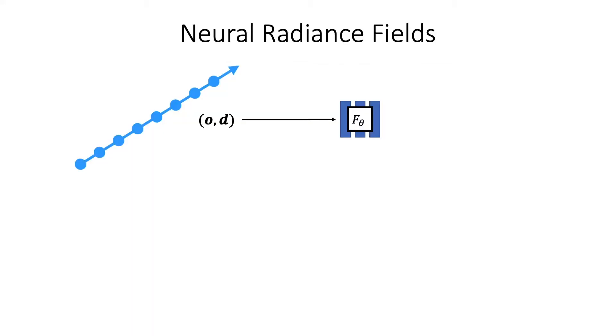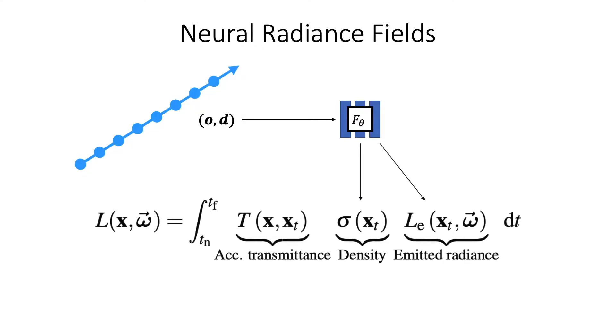In particular, they predict volume density and emitted radiance at a set of points along a ray. Together, these predictions are used to approximate a volume rendering integral.